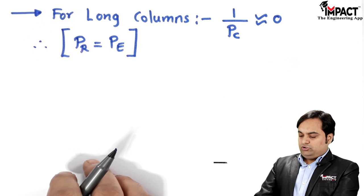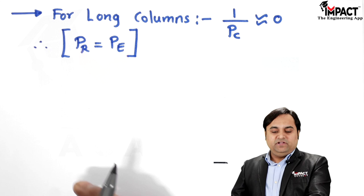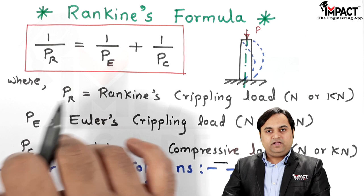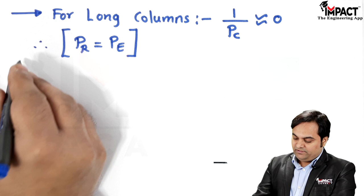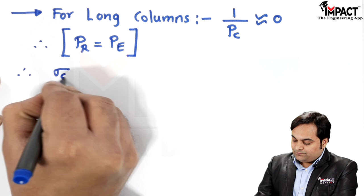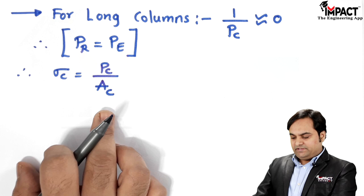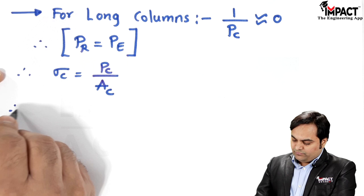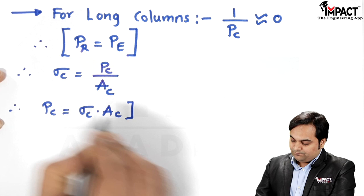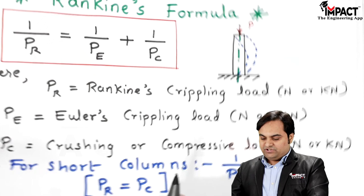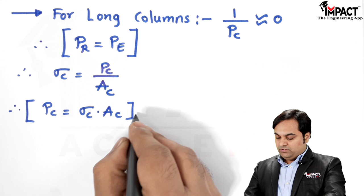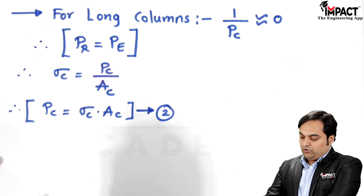For medium columns, we must use the general formula and derive an alternate expression. The compressive stress equals compressive load upon the cross-sectional area, where the cross-section can be circular, hollow circular, rectangular, hollow rectangular, I-section, T-section, or any kind. Therefore, P_c equals σ_c times A_c. This is equation number two.